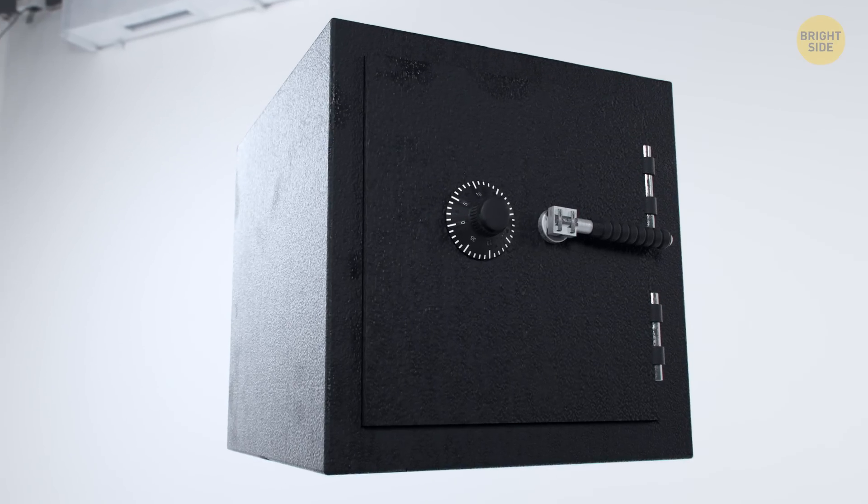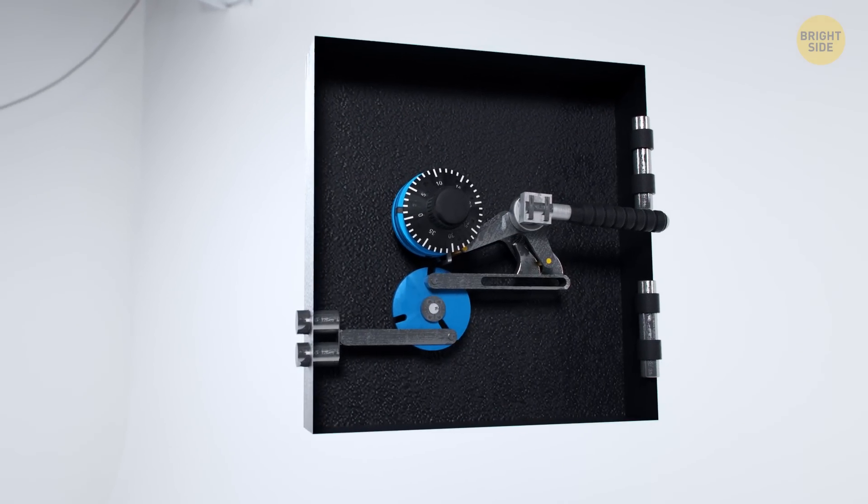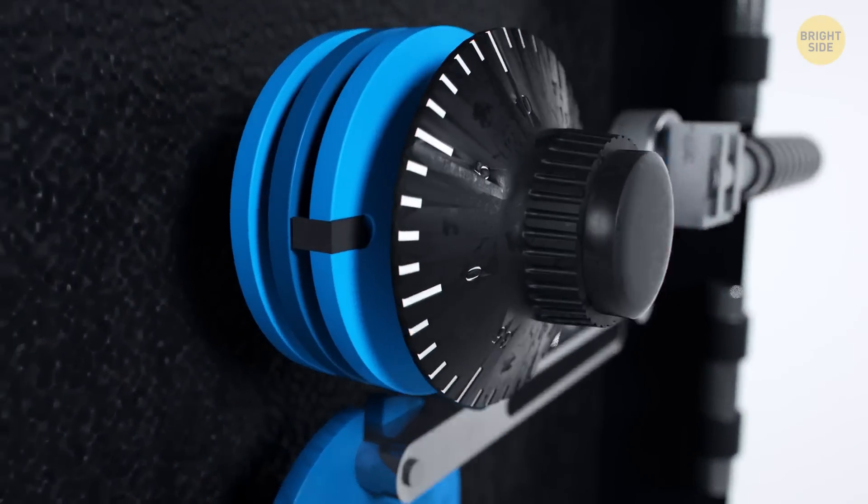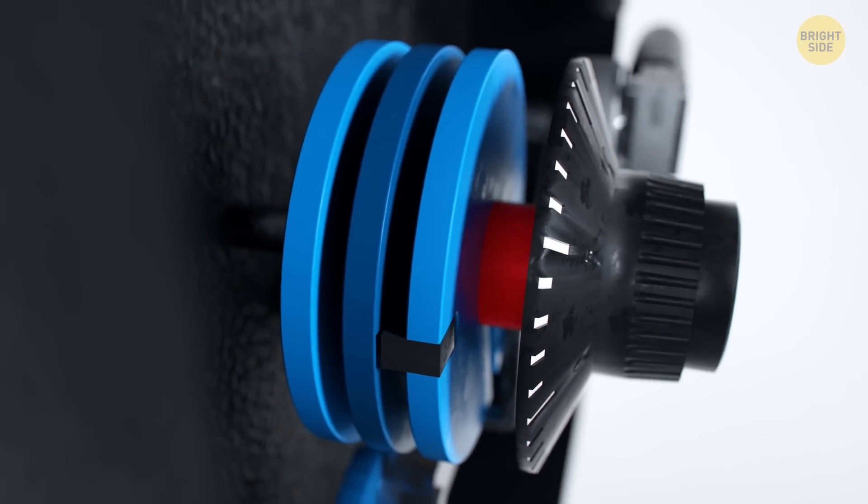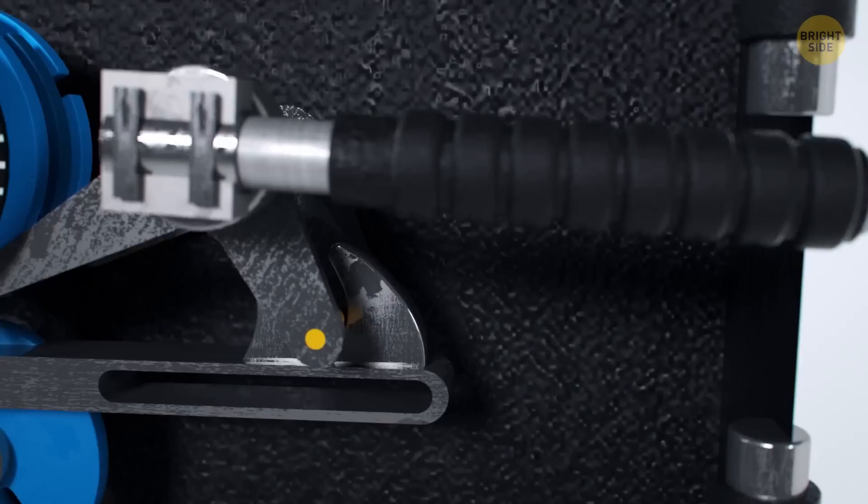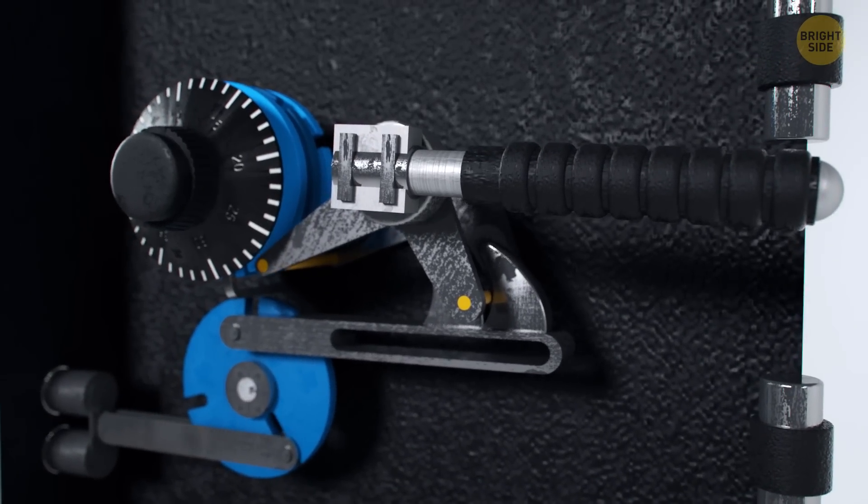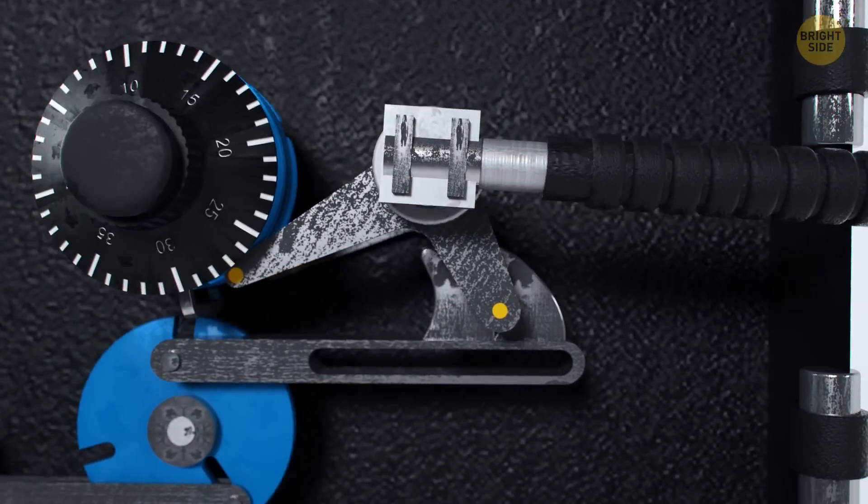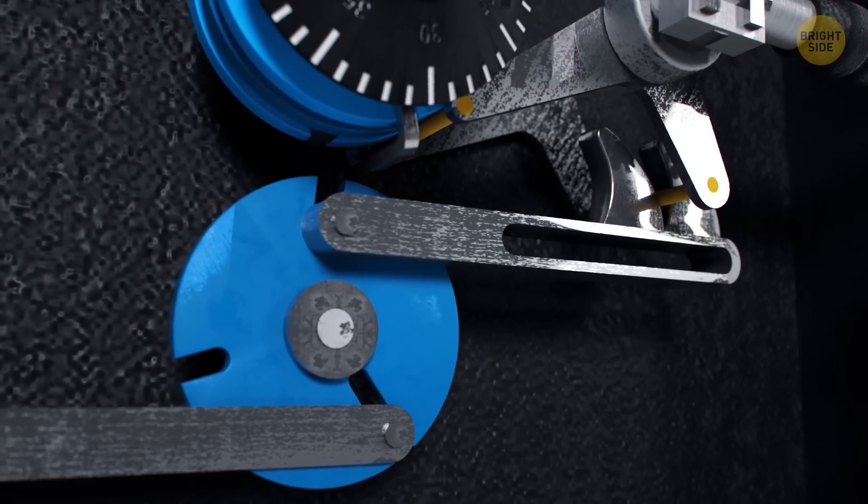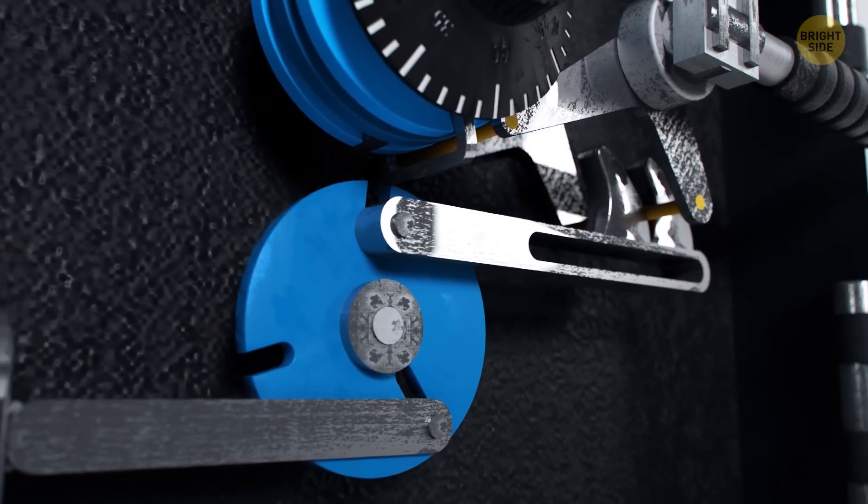The lock codes on safes work differently. Here it is. It consists of a combination dial wheel, a spring, 3 discs with notches, a small wheel, and a fence. The handle of the safe is connected to the lever, but you can't lower the handle completely because the fence blocks the rotation of the lever. So we have to enter the combination to remove the fence and lower the safe handle.